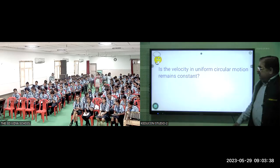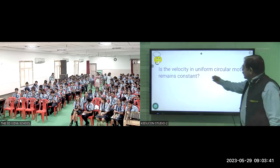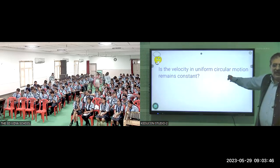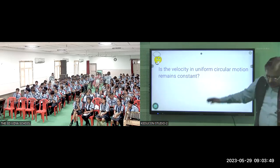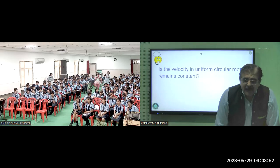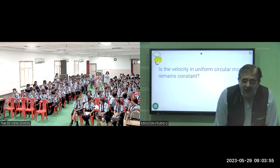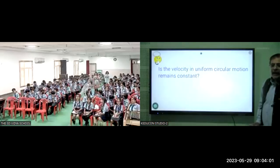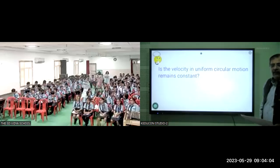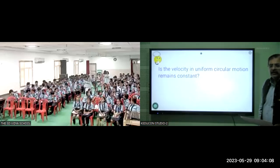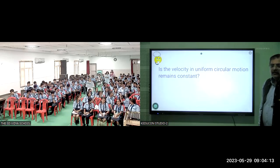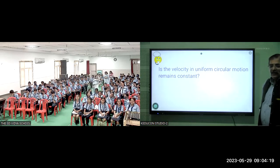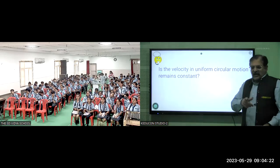Is the velocity in uniform circular motion constant? No — because at every moment, velocity is along the tangent, and the tangent direction changes at every point. So velocity is not constant in circular motion.